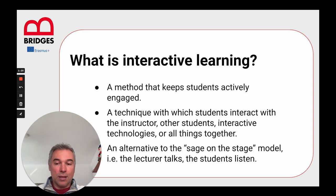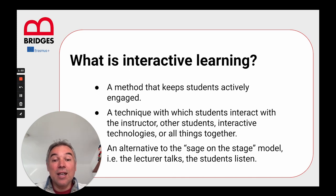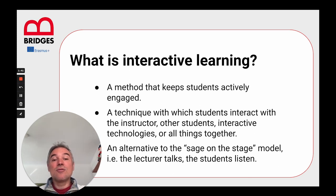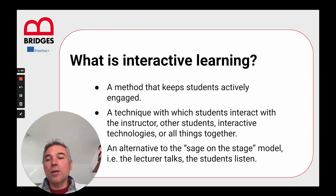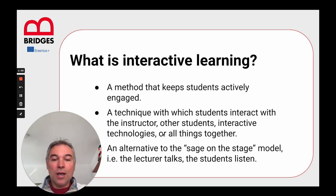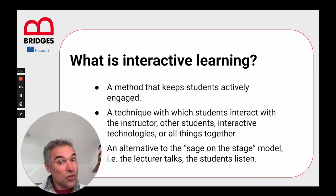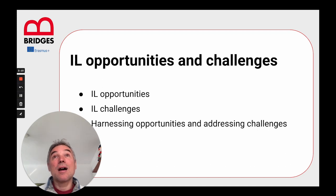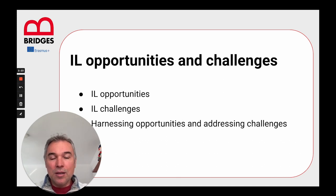So what is interactive learning? It's a method that keeps students actively engaged. It's also a technique in which students interact with several things: they interact with the instructor, with other students, and with interactive technologies both in the classroom and online. Or even better, they interact with all things together. This is considered an alternative to the sage on the stage model, where the lecturer talks and the students just listen.